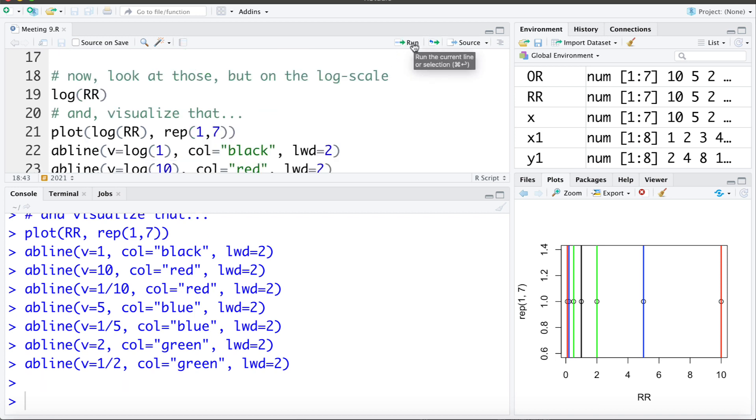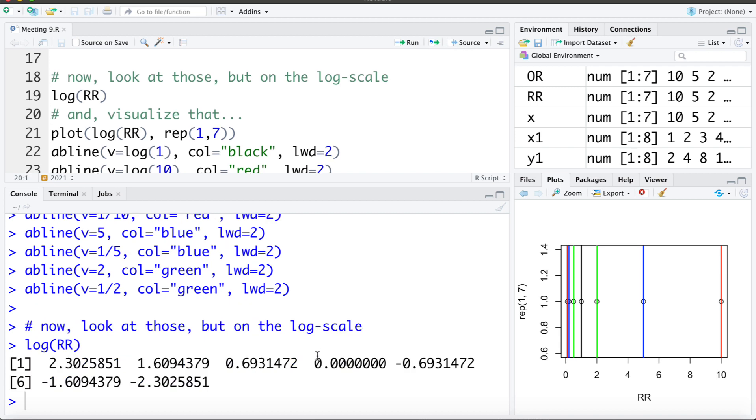Now let's look at these rate ratios on the log scale. The log of 1 is now 0, the null value. We can see the log of 2 and the log of 1/2 are the same distance from that null value. Similarly, the log of 10 and the log of 1/10 are the same distance from the null value.